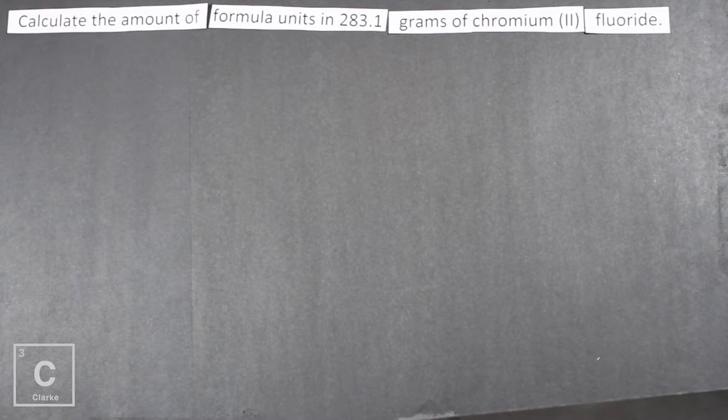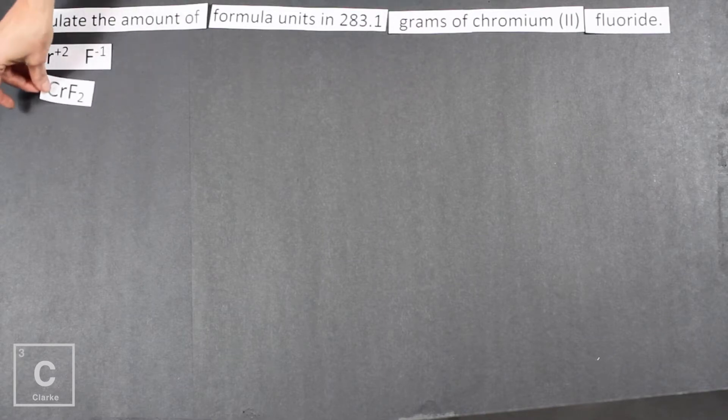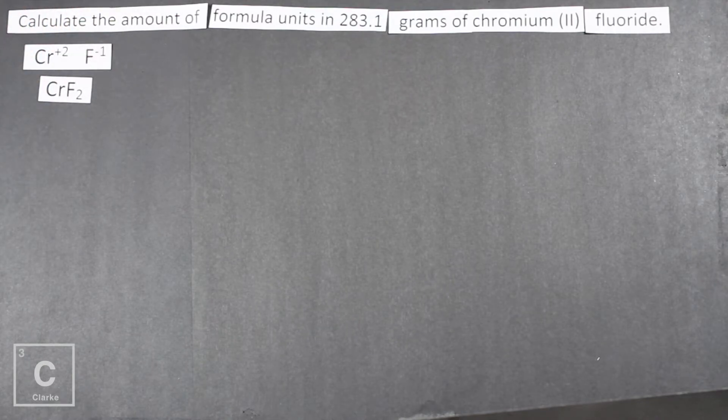Okay, so this question says calculate the amount of formula units in 283.1 grams of chromium (II) fluoride. So first we need to get that chemical equation and we are definitely going to need it because the question asks about mass. We are going to have to find the molar mass. So first let's find the formula. Chromium is a +2 because Roman numeral II, fluorine is -1. Remember we want these charges to cancel out. That's how we're going to get our formula. Ionic compounds are always neutral. So we get CrF2.